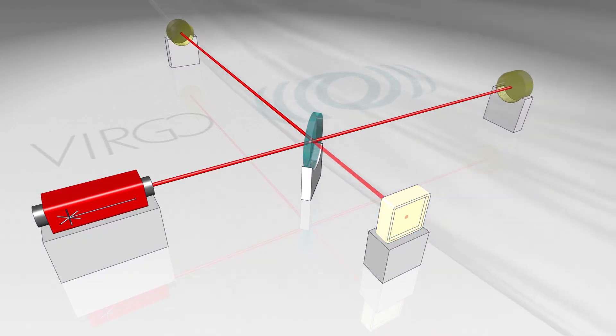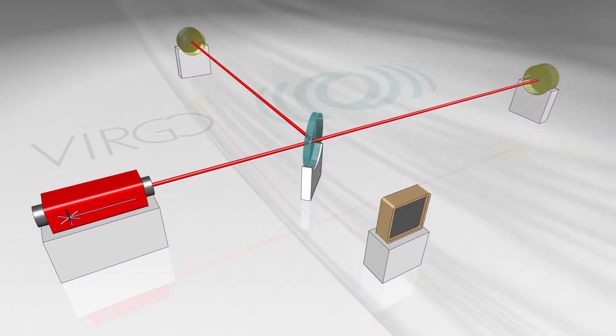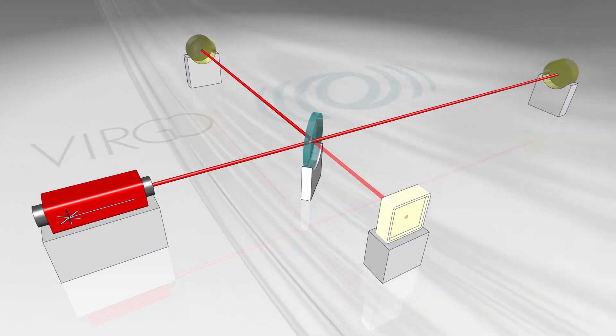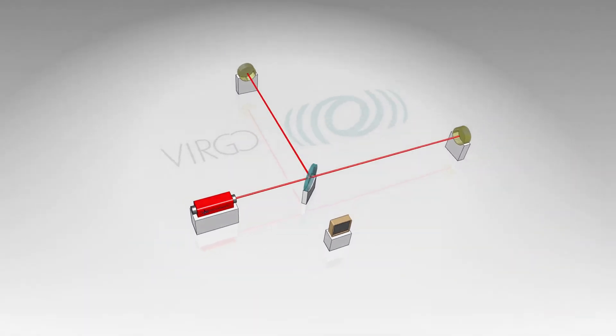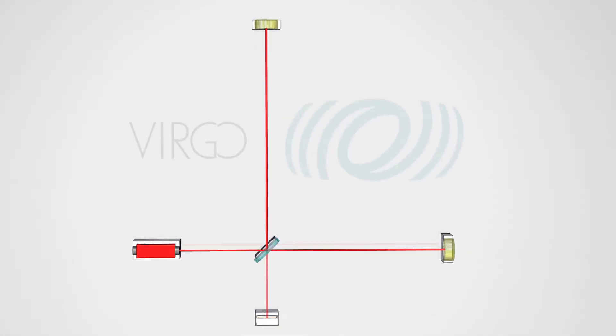A passing gravitational wave distorts space, making one arm slightly shorter and the other arm a little longer. The light waves do not cancel each other anymore and we now measure a tiny signal in the detector.